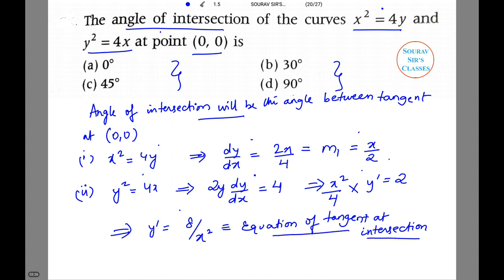So we can say that tan θ is equal to 8/0, which is equal to infinity. This implies that θ is equal to—pause the video and think what will be the value of theta. Yes, you are correct, the value of theta in this case will be 90 degrees.